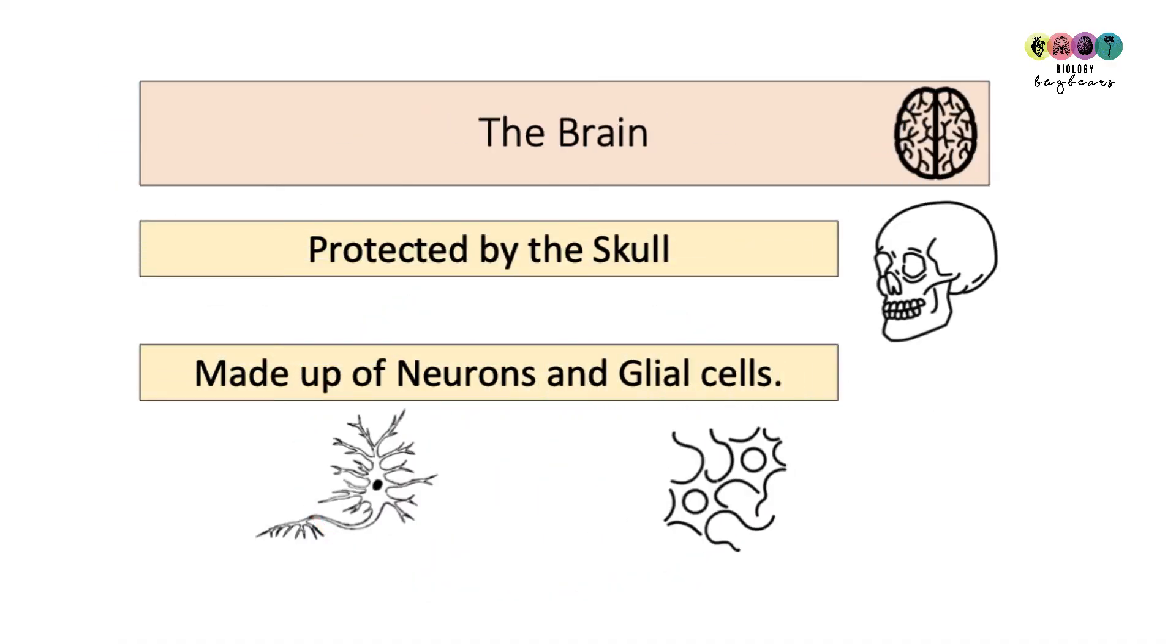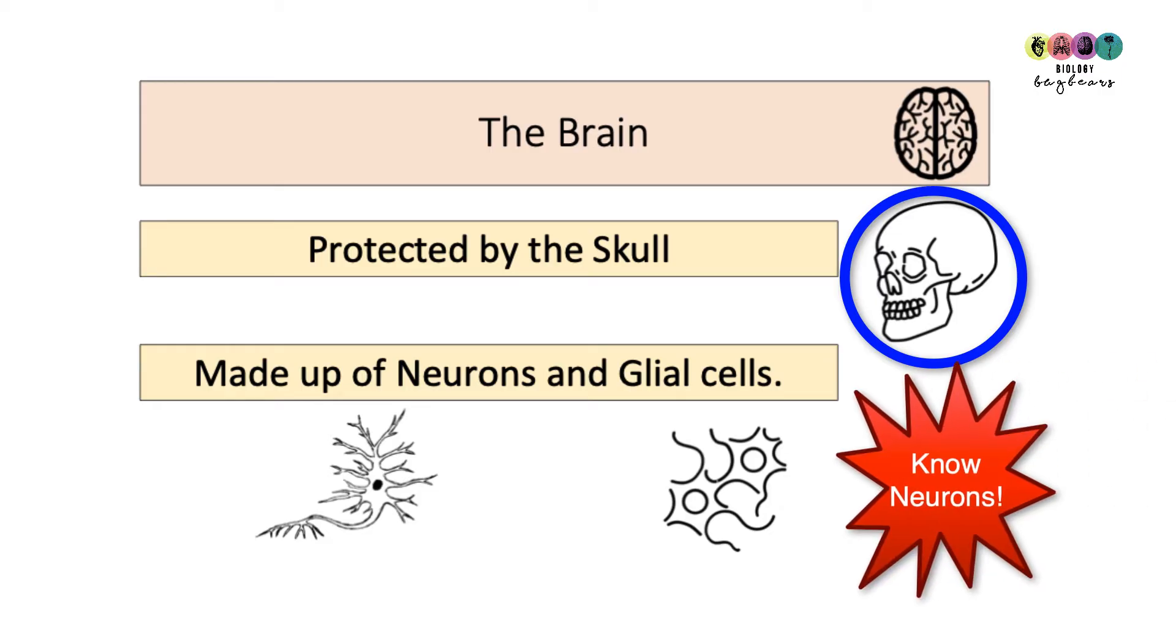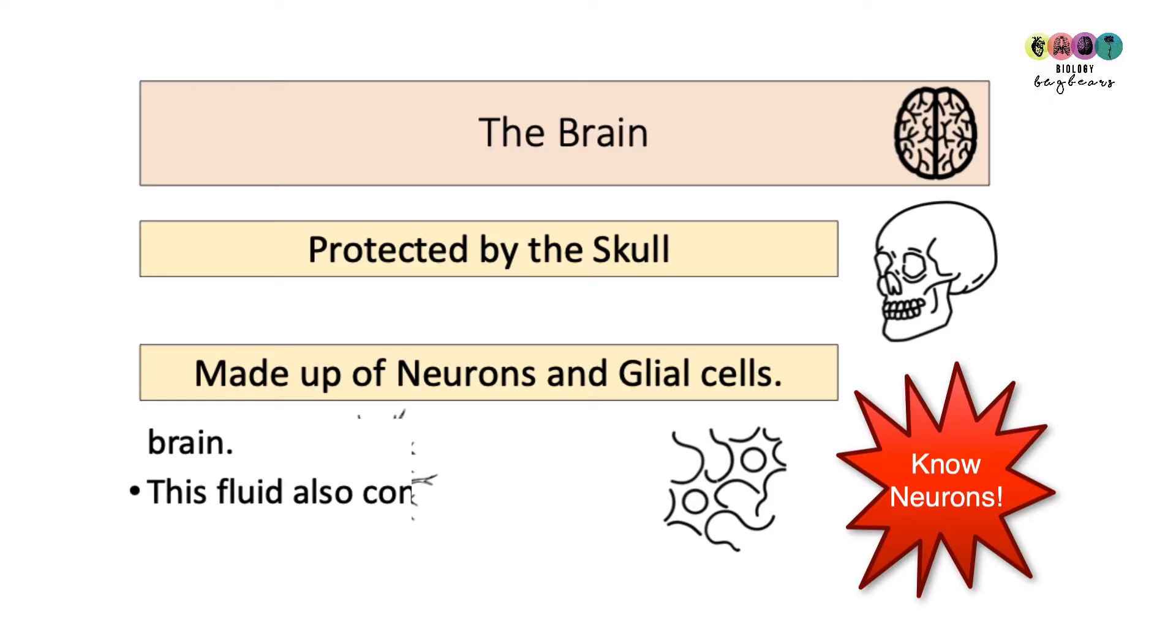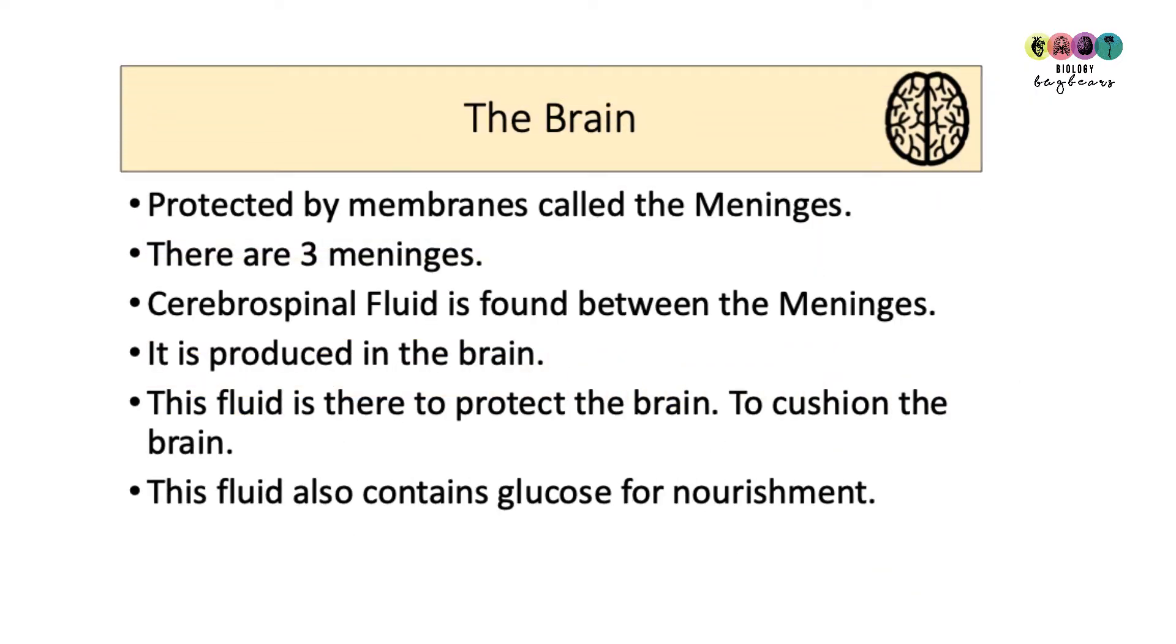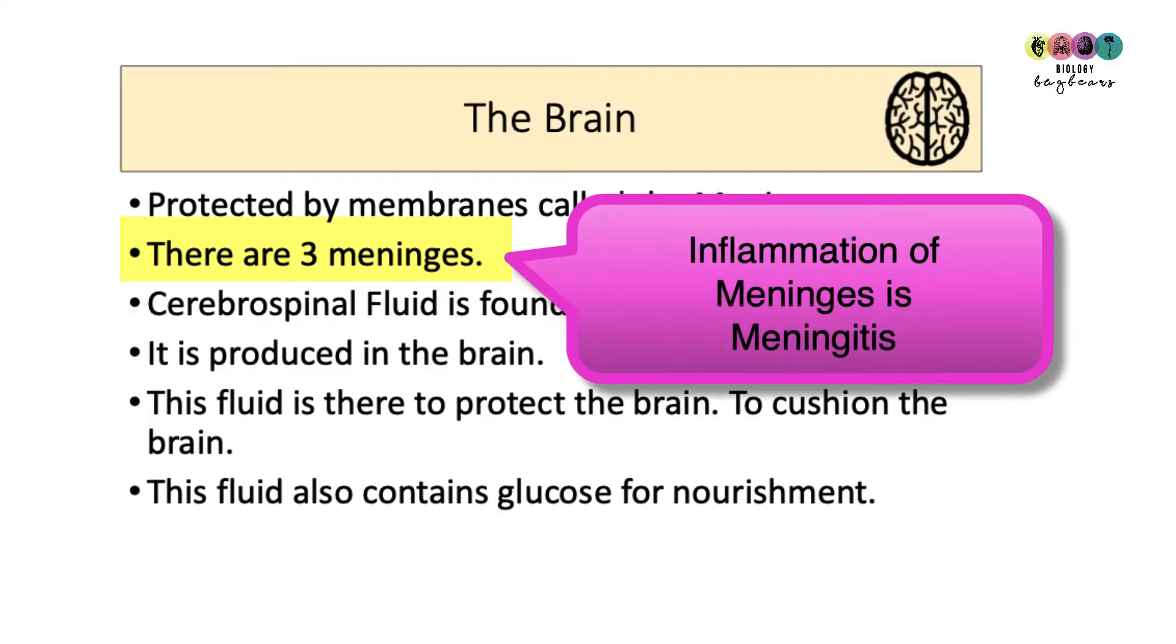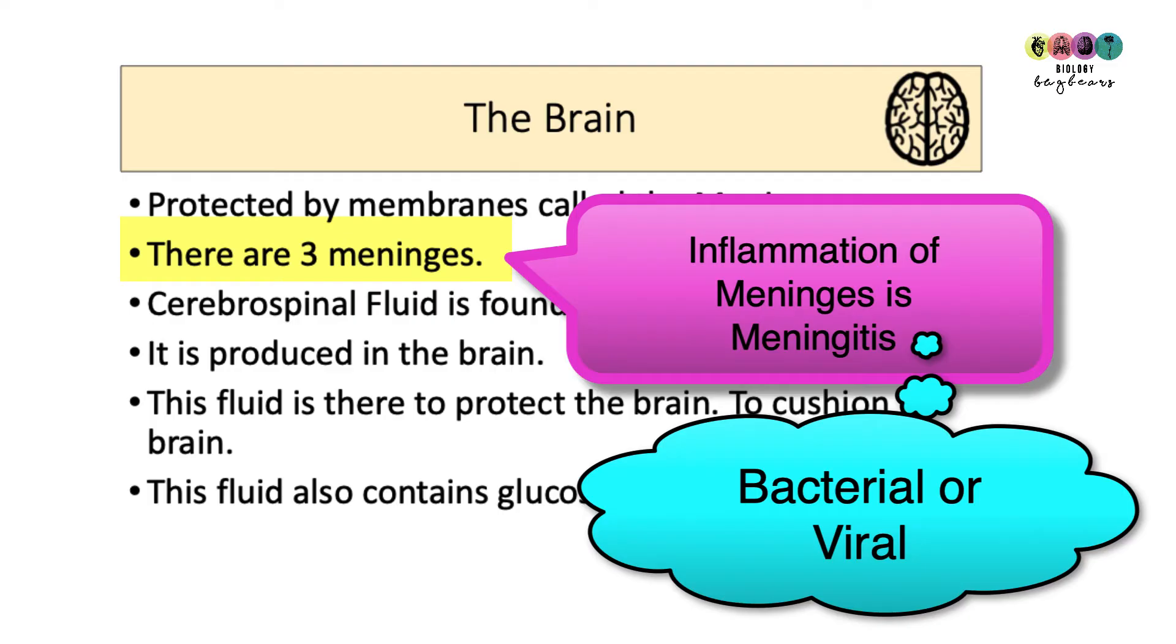So let's start with the brain. The brain is protected by that bony structure your skull. It's made up of billions of cells called neurons and many more other cells known as glial cells. As well as the skull, your brain is protected by these membranes called the meninges and there are three of them. These membranes can become inflamed, known as meningitis, and this inflammation can be caused by bacteria or viruses.